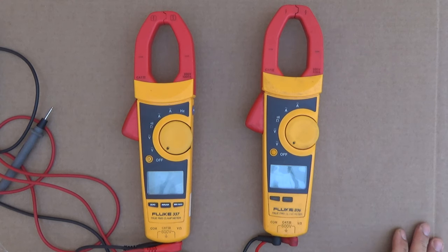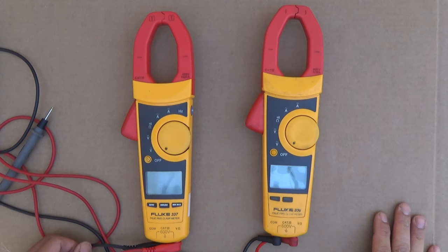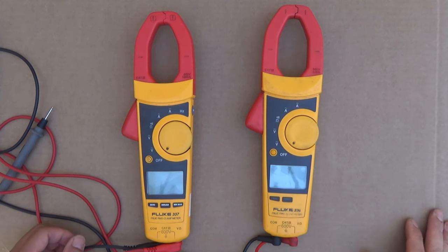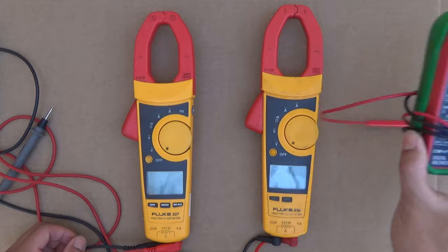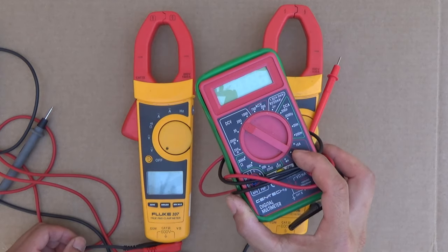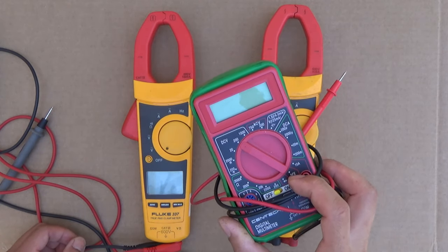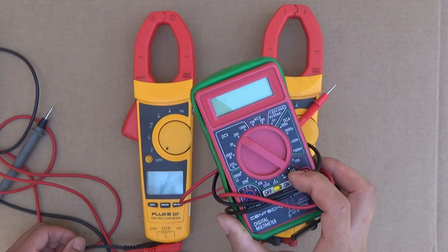These clamp meters have automatic shut off, so it will turn off automatically if you just let it idle for maybe 10-15 minutes, unlike the traditional multimeter. This one here, you forgot to turn it off, it will stay on until the battery dies.